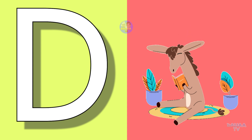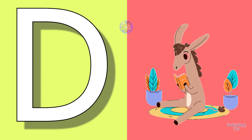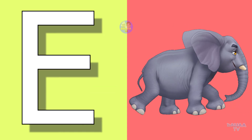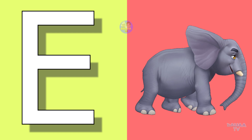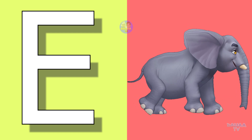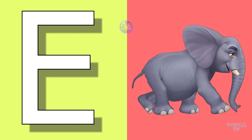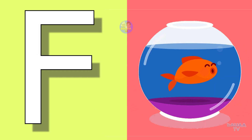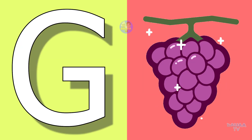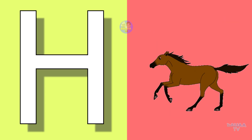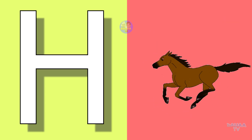E for elephant, elephant means haati. F for fish, fish means machli. G for grapes, grapes means angur.